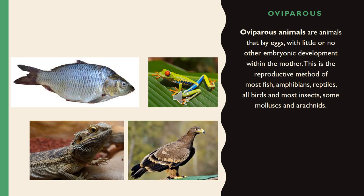Oviparous animals are animals that lay eggs with little or no other embryonic development within the mother. This is the reproductive method of most fish, amphibians, reptiles, all birds, and most insects, some mollusks, and arachnids.